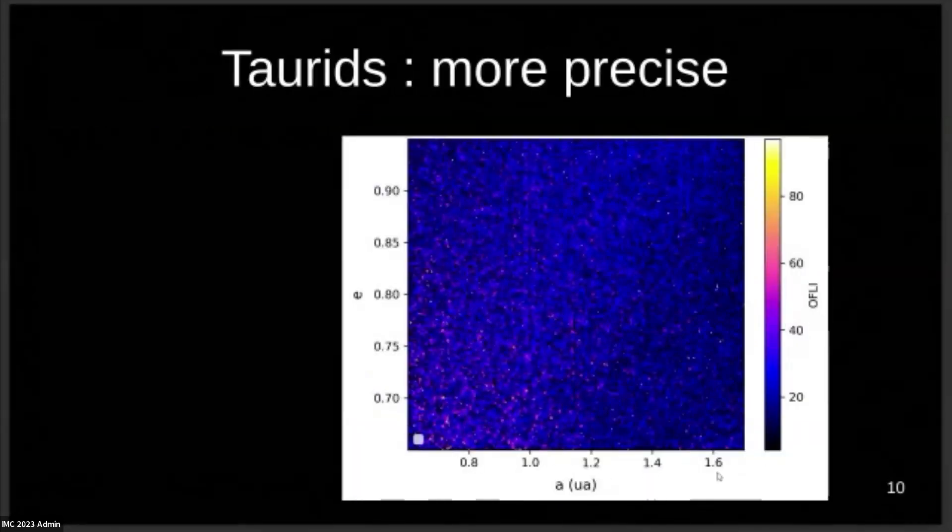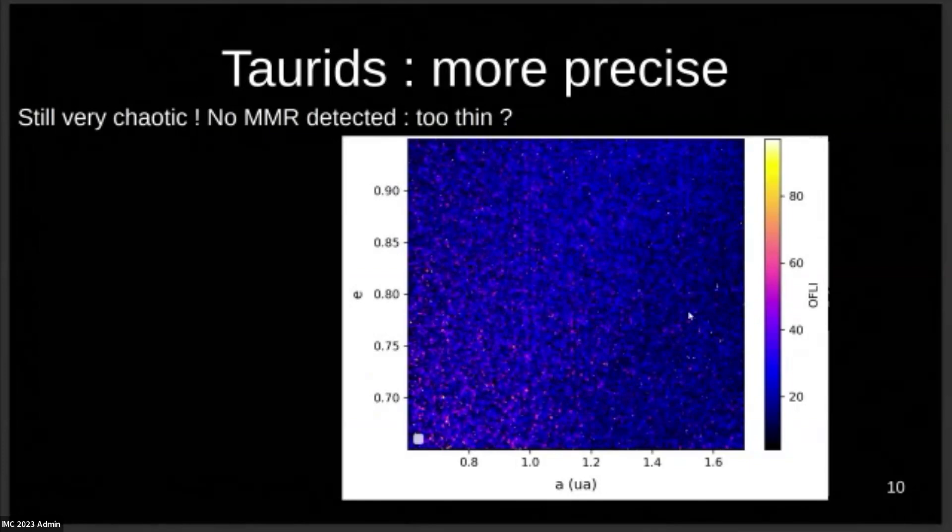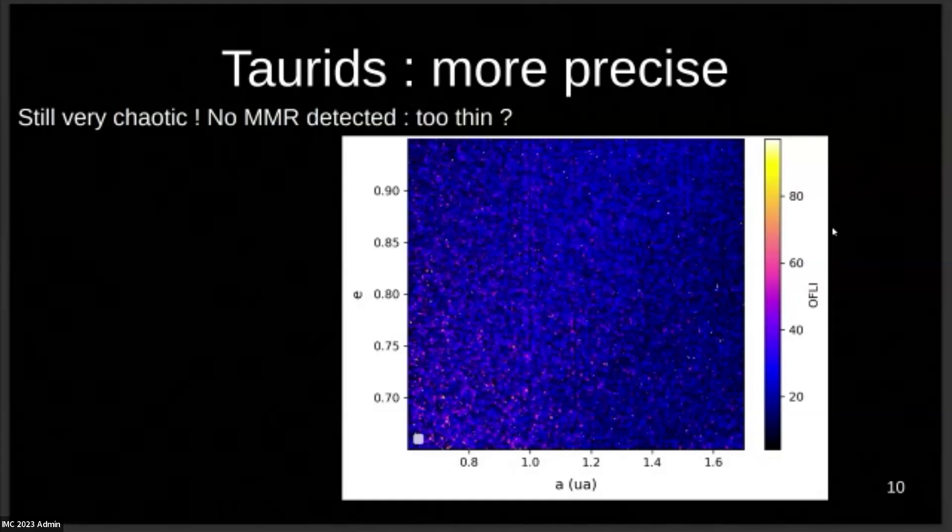You can see here in the semi-major axis, I have a much more restricted range. That's good. But I still have a very chaotic map. I don't detect any MMR, which was very surprising, because we know from the literature we're supposed to detect some. For the moment, my hypothesis is that they're probably too thin. The other interesting fact was I redid the same kind of procedure as before with the radiants in this map with those particles, and I couldn't detect any southern Taurids. I actually have no idea why. That seems very strange to me, because I still have pretty wide orbital elements, so I'm very surprised of this. If you have any idea, I would be happy to discuss this.